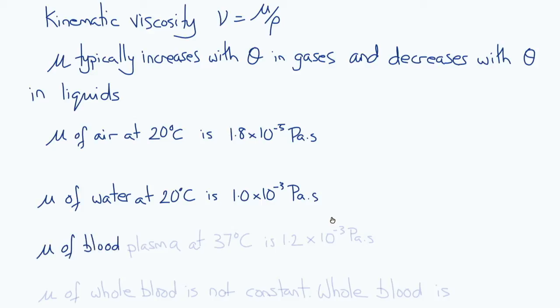The viscosity of blood plasma at 37 degrees Celsius is only a little bit greater than that of water at room temperature, 1.2 by 10 to the minus 3 pascal seconds.